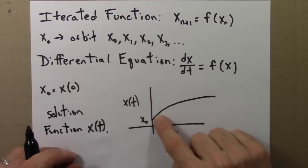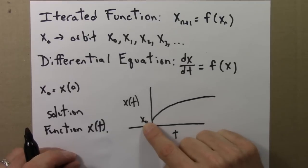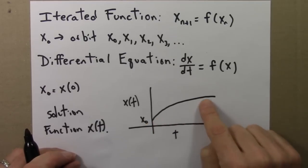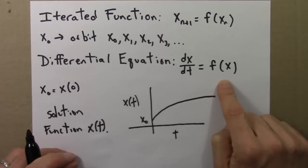Here, this is a smooth curve. It starts at whatever the initial condition is, and then it grows or shrinks according to whatever the instructions are it receives from the differential equation.